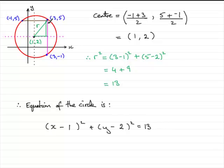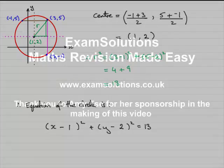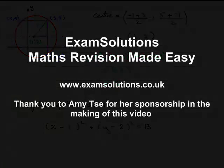This was a very basic example — easy because we had horizontal and vertical chords. I would encourage you to look at my next tutorial on finding the equation of a circle passing through three points, where I'll show you how to handle one where we've got a sloping chord. That brings us to the end of this tutorial. Thank you.